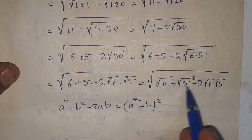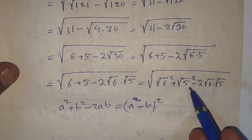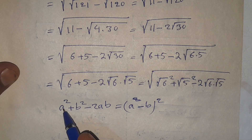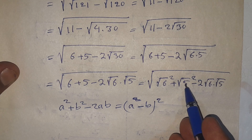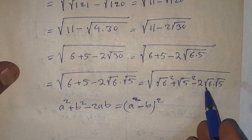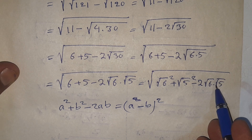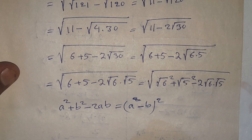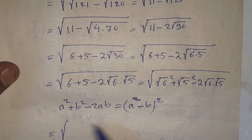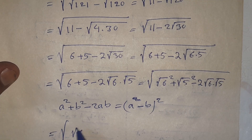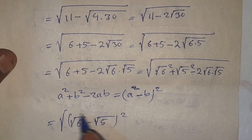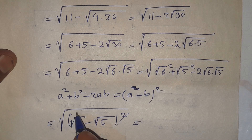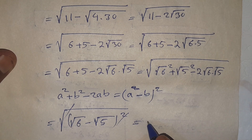Comparing with the formula, a squared is (√6)² and b squared is (√5)², so a is square root of 6 and b is square root of 5. Therefore this equals square root of (√6 minus √5) whole squared, and the square and the radical cancel out.